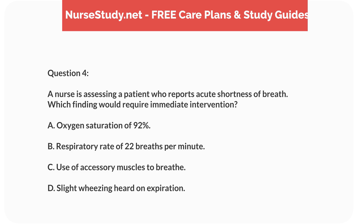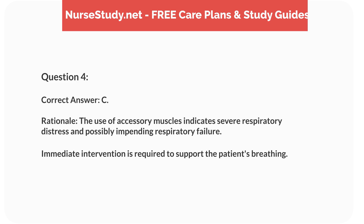Question 4. A nurse is assessing a patient who reports acute shortness of breath. Which finding would require immediate intervention? A. Oxygen saturation of 92%. B. Respiratory rate of 22 breaths per minute. C. Use of accessory muscles to breathe. D. Slight wheezing heard on expiration. Correct answer: C. Rationale: the use of accessory muscles indicates severe respiratory distress and possibly impending respiratory failure. Immediate intervention is required to support the patient's breathing.